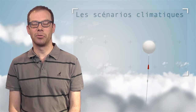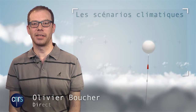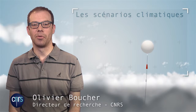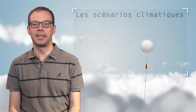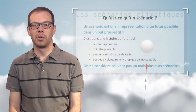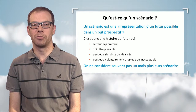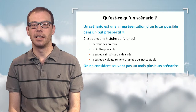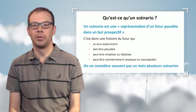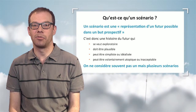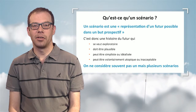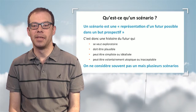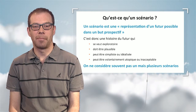Talking about climatic scenarios raises the question: what is a scenario? A scenario is quite simply the representation of a possible future for prospective purposes. Therefore, this future story must be an exploration. It must be plausible — that is, it must not be incompatible with the laws of physics. It should not move away too much from economic theory, or if so, in an explicit way. A scenario should not be likely; we are not even trying to estimate the likelihood of the scenario ever coming true.